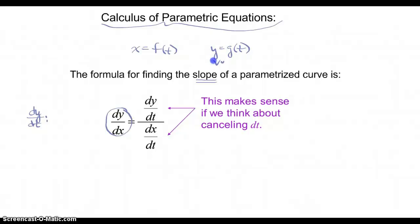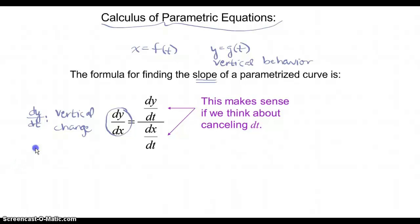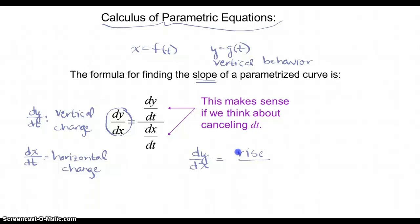The slope of a parametrized curve is dy/dx. If y = g(t) is the vertical behavior of some object or particle, then dy/dt is the vertical change occurring. Correspondingly, dx/dt is the horizontal change. So intuitively, going back to pre-algebra, the slope of the tangent line is just rise over run. For parametric curves, the rise is the rate at which the y-function changes with respect to t, and the run is the rate at which the x-function changes with respect to t.